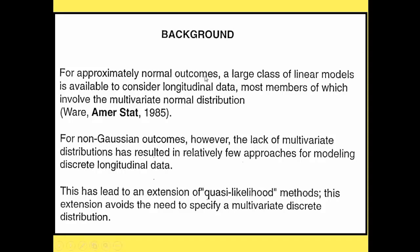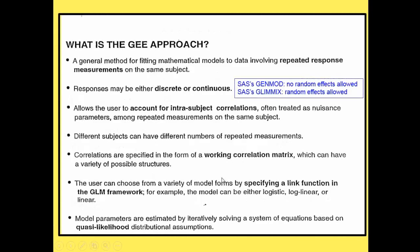For approximately normal outcomes, a large class of linear models is available for longitudinal or correlated data, most involving the multivariate normal distribution. But for non-Gaussian outcomes, the lack of multivariate distributions has resulted in relatively few approaches, particularly for modeling discrete longitudinal data. This has led to the extension of quasi-likelihood called the GEE method — the generalized estimating equation approach.